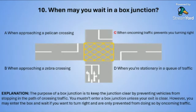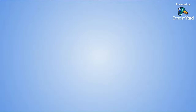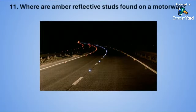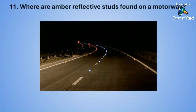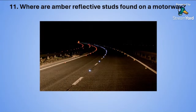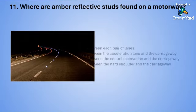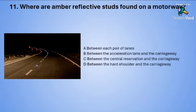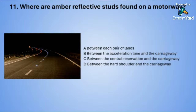Question eleven: Where are amber reflective studs found on a motorway? A: between each pair of lanes. B: between the acceleration lane and the carriageway. C: between the central reservation and the carriageway. Or D: between the hard shoulder and the carriageway.